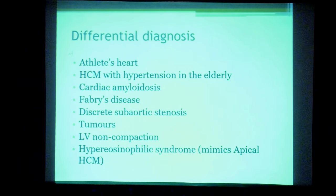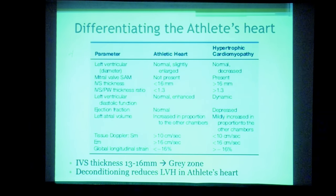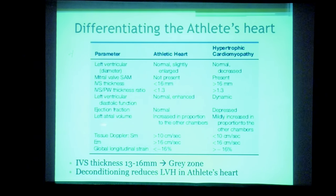Moving to differential diagnoses: the most commonly asked question is how to differentiate an athlete's heart from HCM. The athlete's heart develops with rigorous cardiovascular training. Key differentiating features: LV cavity size is normal in athlete's heart (decreased in HCM); there is no SAM, no LVOT obstruction, and diastolic parameters are normal in athlete's heart, with normal systolic and E' velocities on tissue Doppler. Septal thickness is usually less than 13 mm in athlete's heart and more than 16 mm in HCM, with 13–16 mm considered a gray zone.